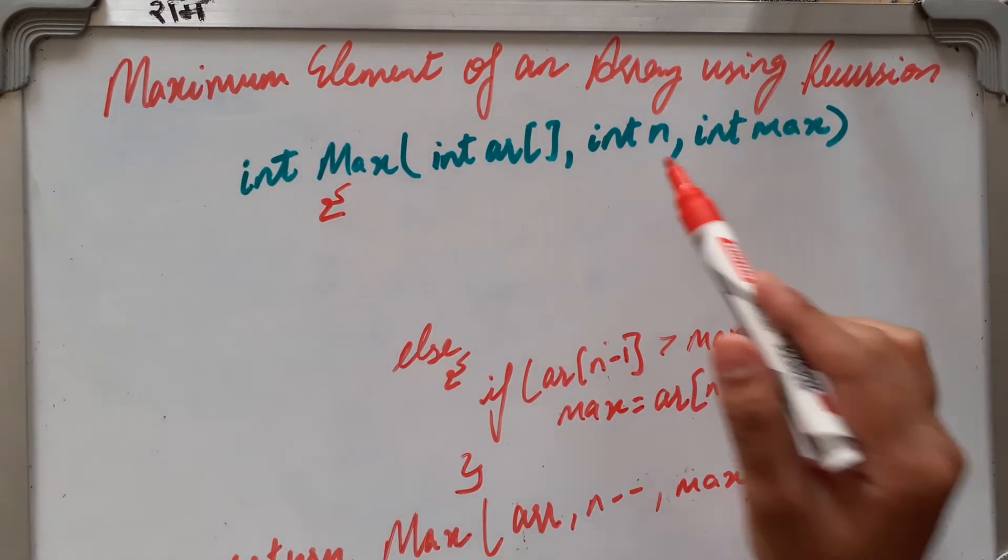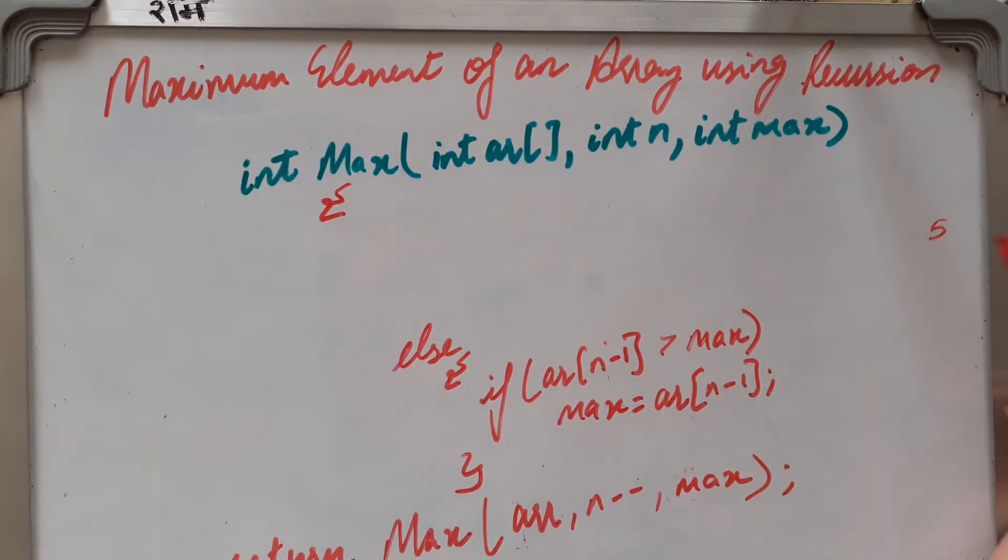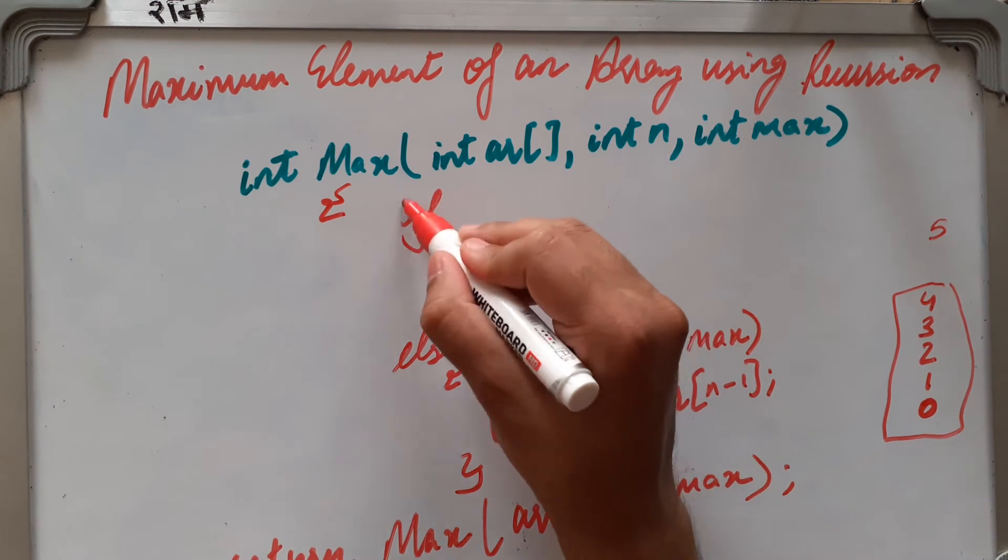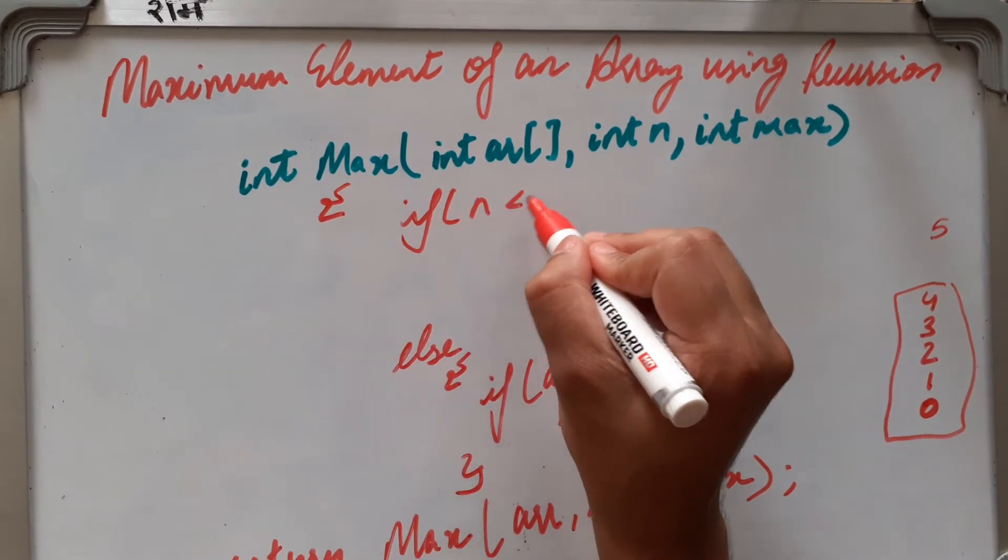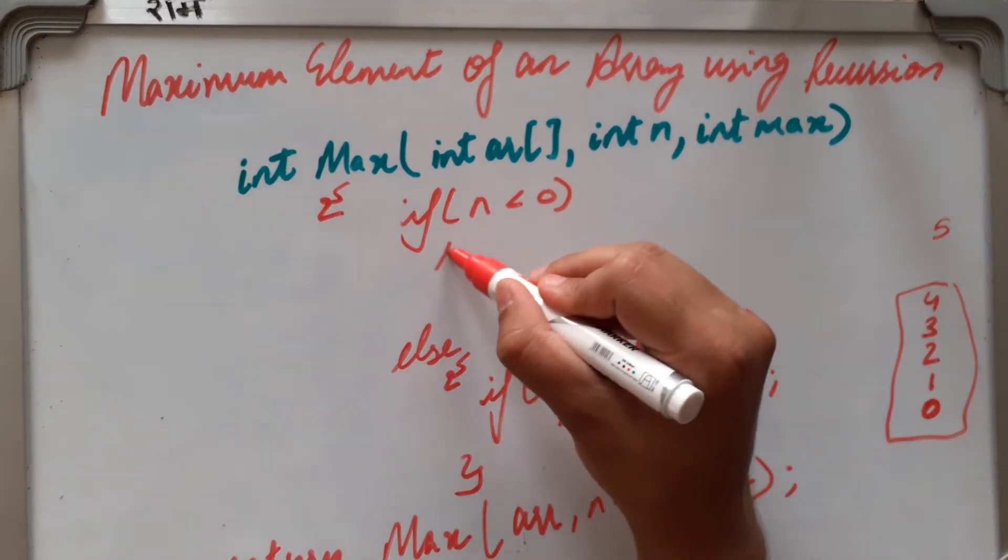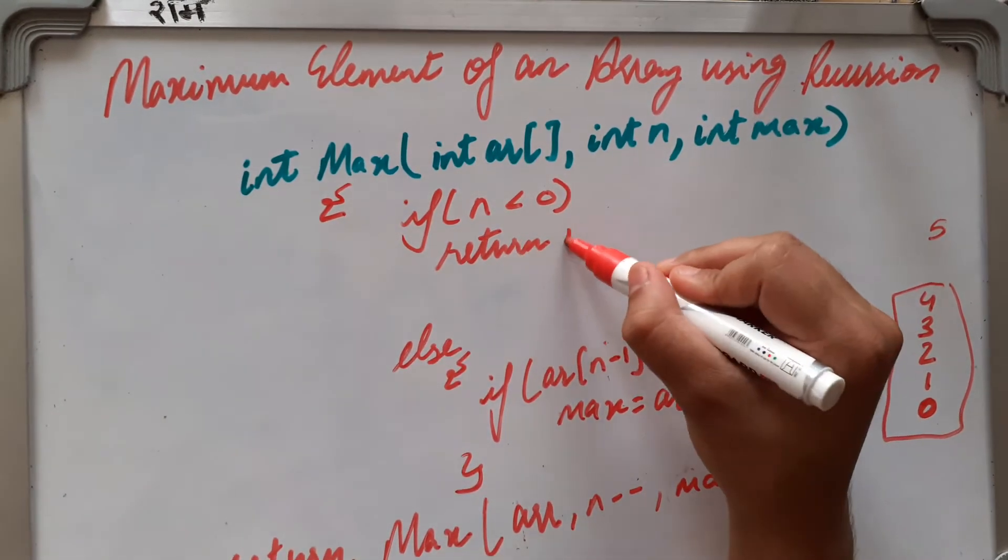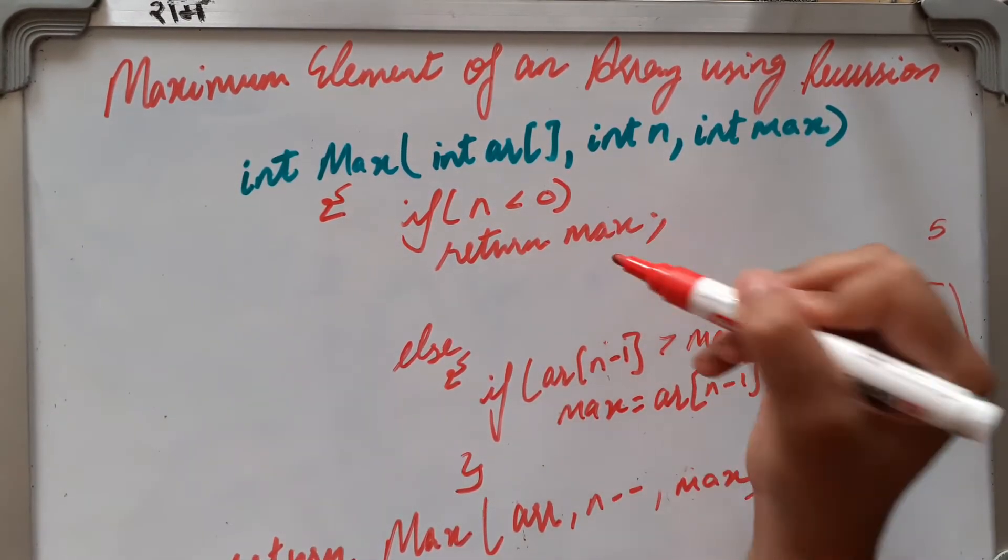Where n is, where it starts from, suppose n is 5, pass from 4, 3, 2, 1, and 0. It goes to 0. If we don't want it to go below zero, we have to put a break point for recursion. So if n is less than zero, then return max.